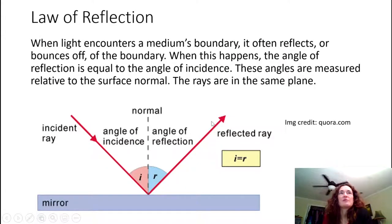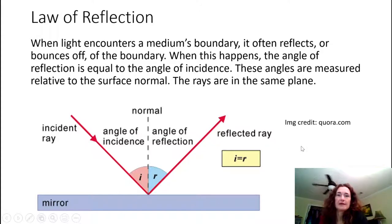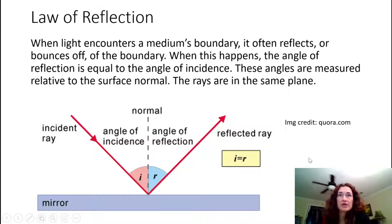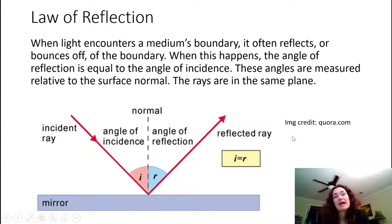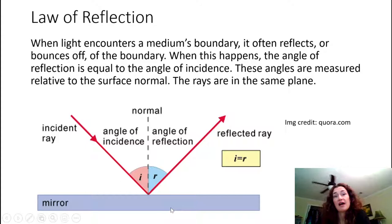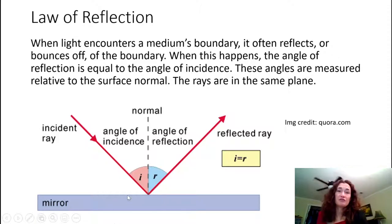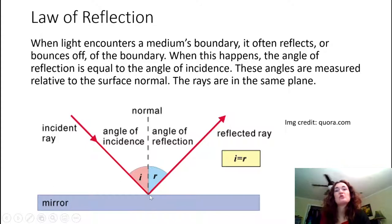So let's talk about the law of reflection. Reflection happens when light is incident on a boundary between media. When light encounters a medium's boundary, it often reflects or bounces off that boundary. The law of reflection says that the angle of incidence — the angle the incoming light makes with the surface normal — equals the angle of reflection, which is the angle the light makes with the surface normal when it leaves. All of these angles are defined with respect to the surface normal, not the surface itself. The surface normal points perpendicular to the plane of the surface.